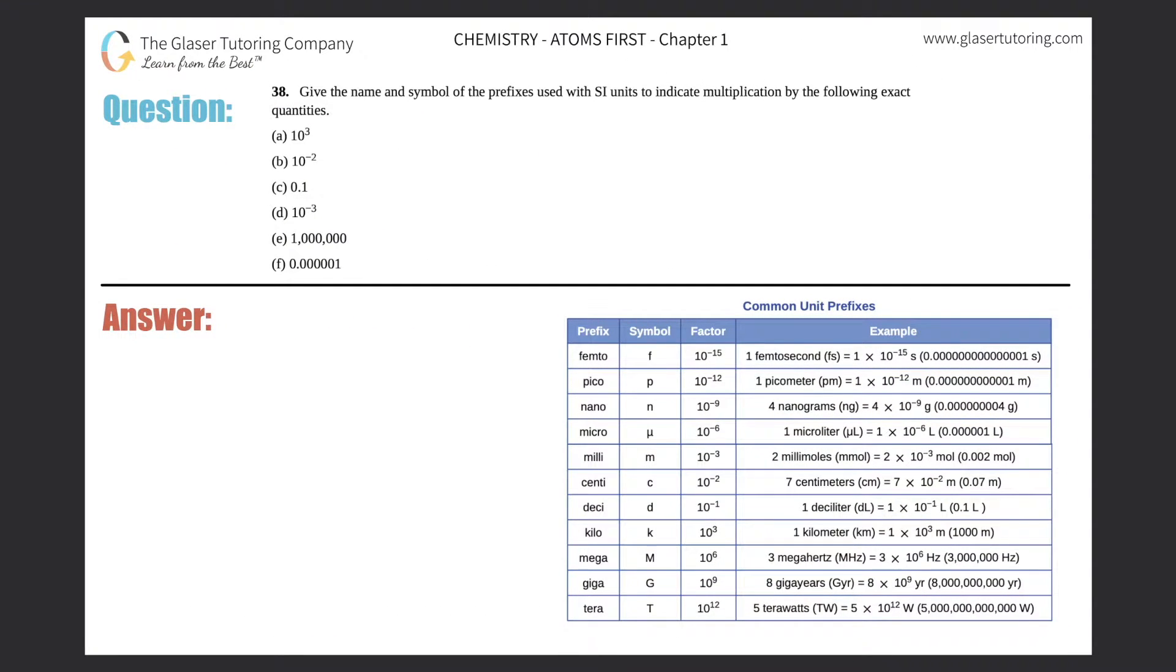Number 38. Give the name and symbol of the prefixes used with SI units to indicate multiplication by the following exact quantities. And then like always, I see A through F. So first things first, I'll just write A through F over here. So A, B, C, D, E, and F.